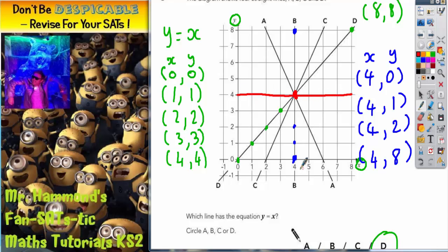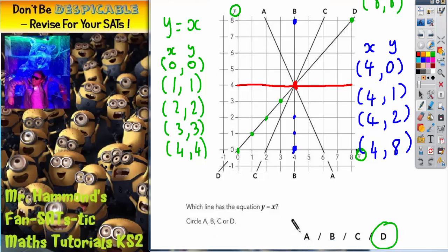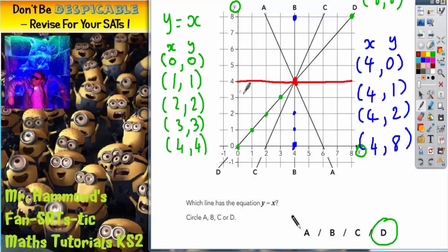Now we need to give the equation of this line. So let's write down some coordinates on this line. We only need to really pick three coordinates. Well, we could have this one, this one, and this one. So if we write them down.